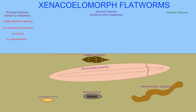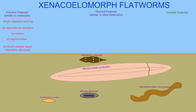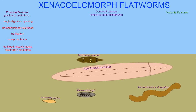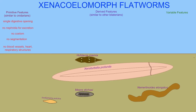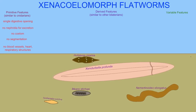They lack a coelom, they do not have segmentation, they do not have blood vessels, a heart, or respiratory structures, and for these reasons they are more primitive than other groups.